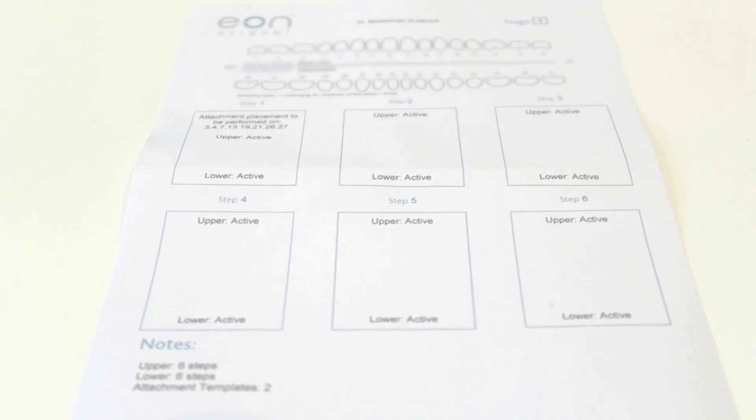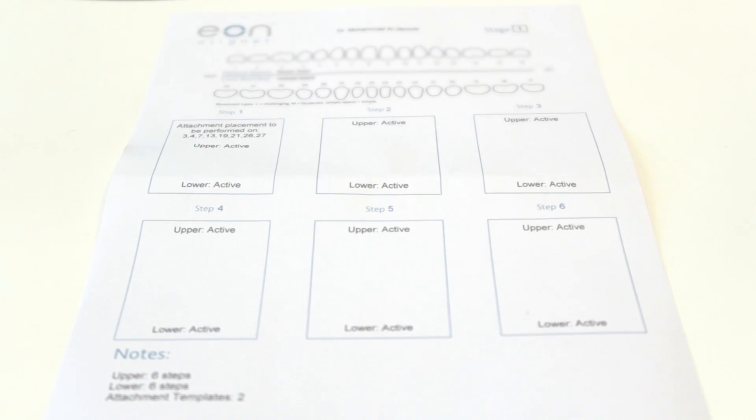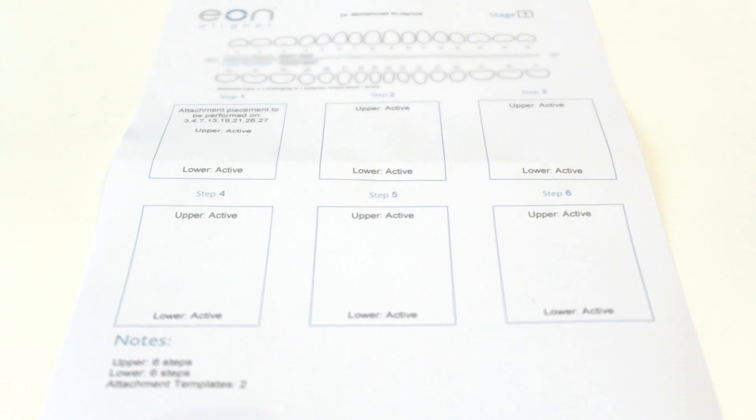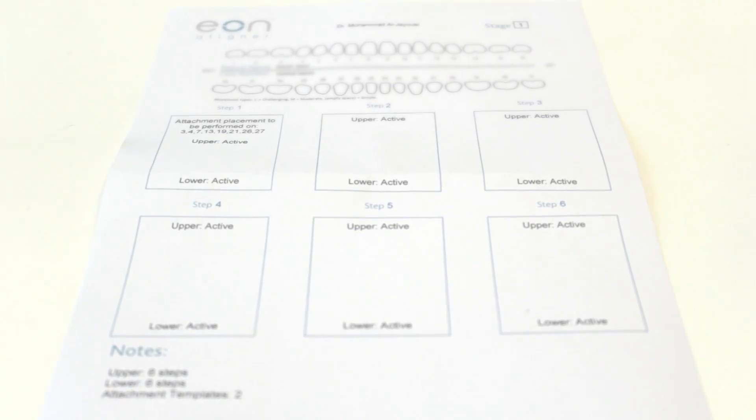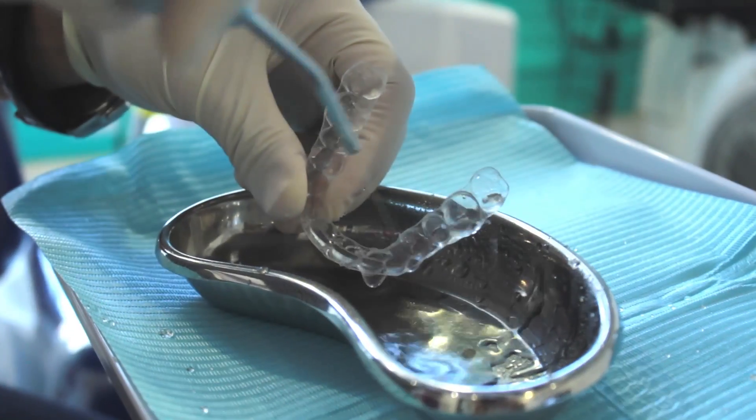You will know when to place the attachment by looking at your attachment template, which will be provided to you by EON Aligner, indicating at which step to place the attachment. So let's get started.